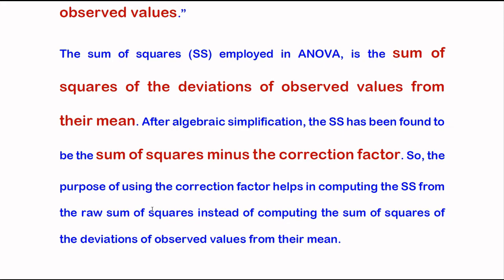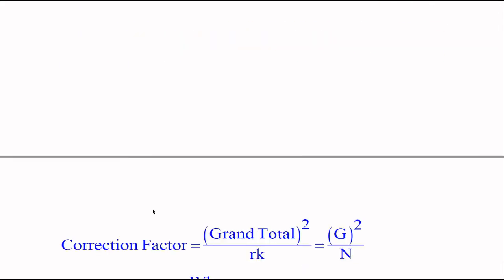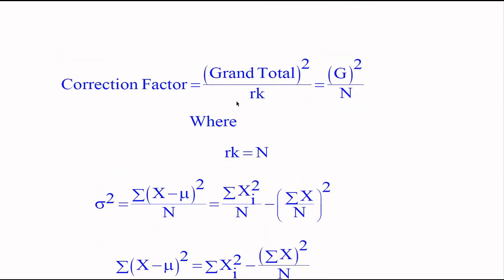Here we see its mathematical form. Correction factor equals grand total squared (sum of total number of observations squared), also represented by G squared, over RK. R here is the number of replications and K is number of treatments. RK equals N, the total number of observations.